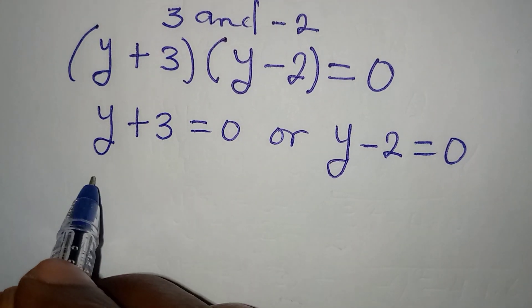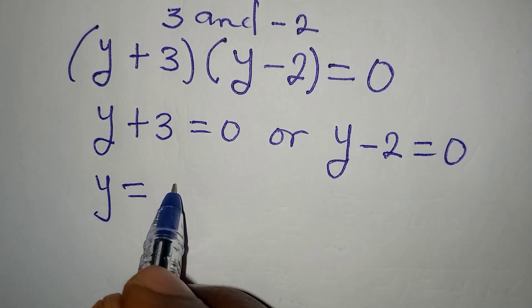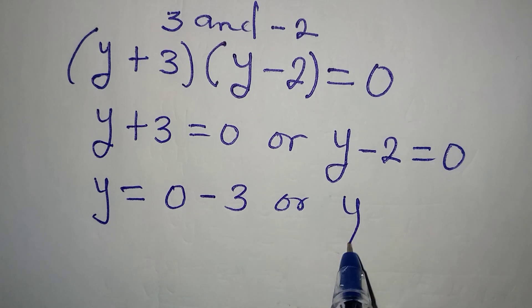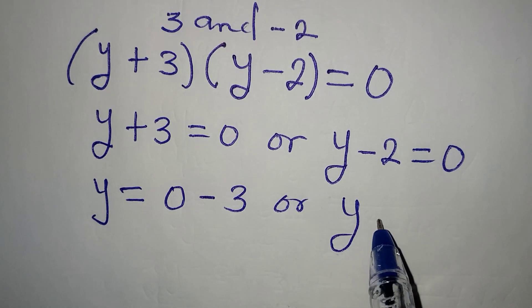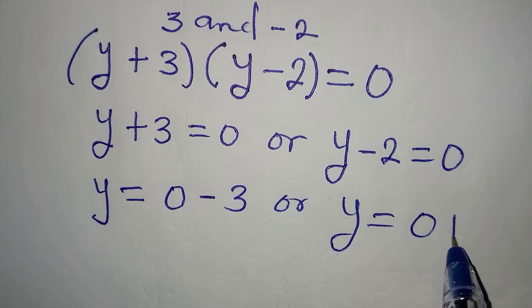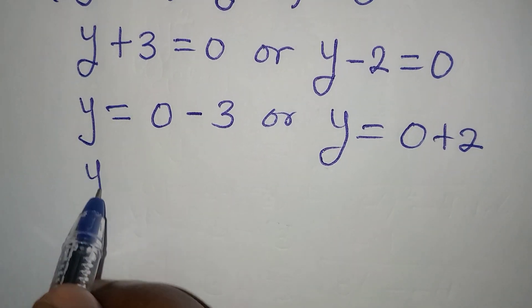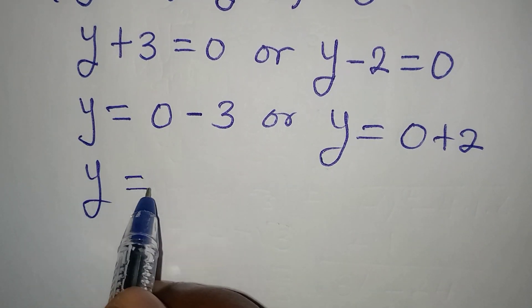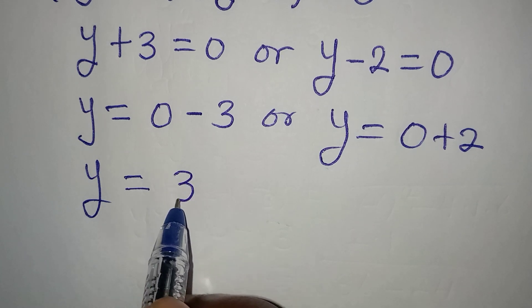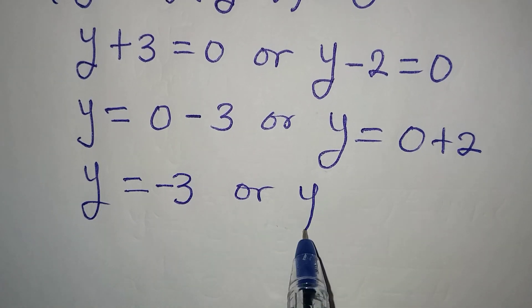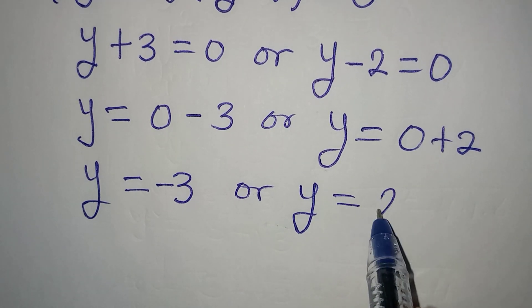From here, y will be equal to 0 minus 3, or y will be equal to 0 plus 2. So y from here will be equal to minus 3, or on this side y will be equal to 2.